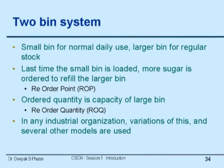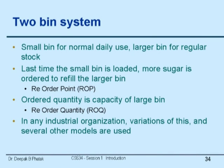This simple system is called a two-bin system of inventory control. The small bin is for normal daily use; the larger bin is for regular stock. The last time the small bin is loaded, more sugar is ordered to refill the larger bin. This point is called a reorder point — that is when you reorder a stock of inventory. And you don't reorder just a small dabba worth; you reorder 2 or 3 kilograms. The reorder quantity ordered on that date is such that by the time the supplier supplies it, the small quantity will be sufficient for your normal production. That's the fundamental of this simple scheme.